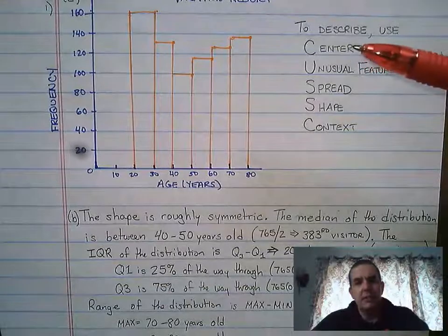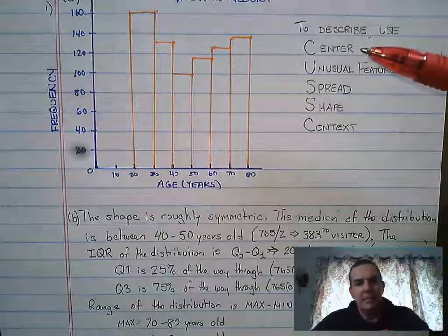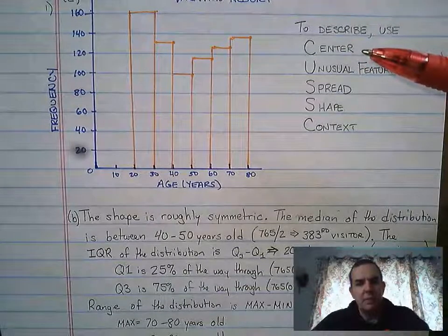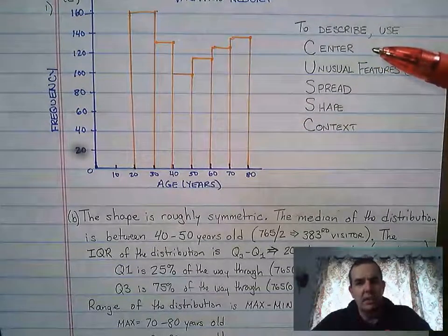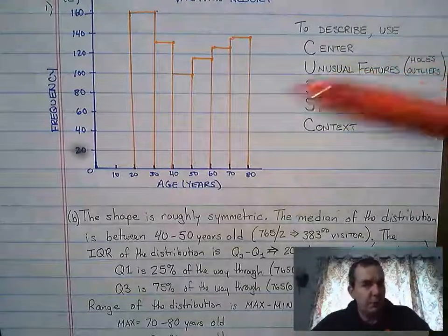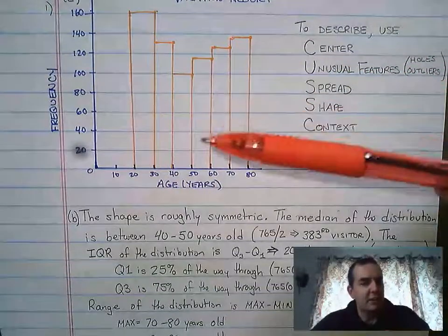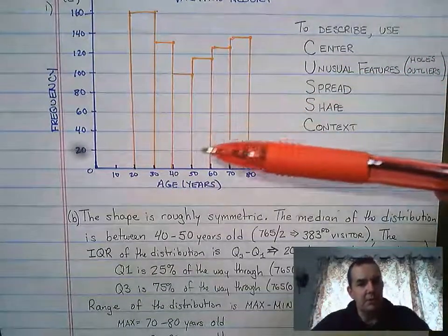As a quick review for center, you're going to use either mean or median. You use mean when your distribution is roughly symmetric, you use median in all the other scenarios. In fact, I would probably use median in this scenario because we really don't know all the data points, just ranges of them.